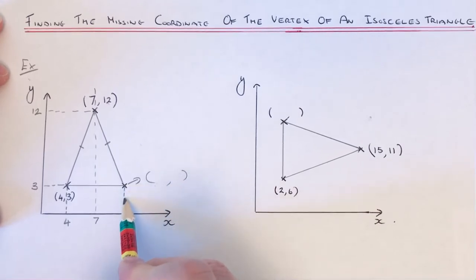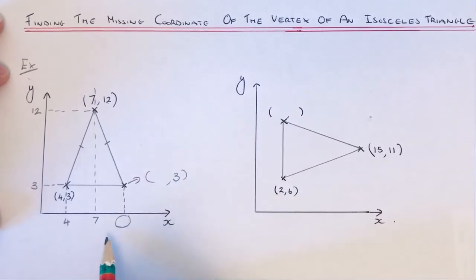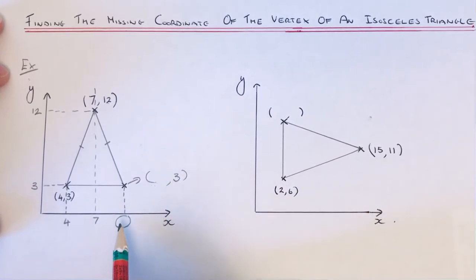We don't have this number along the x-axis, but we do have the y-axis number, which is three. So we can fill the three in there. We're just after that first x coordinate.